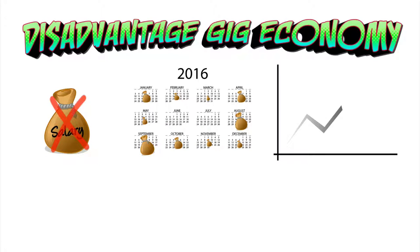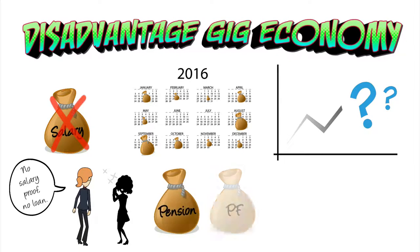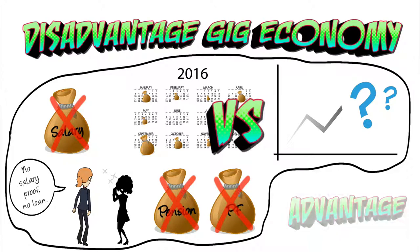Income volatility also means that you may find making future plans difficult. Organizations like a bank that require a salary proof to give you a loan may also create problems. And you are definitely not getting any pension or provident fund. This is the price you pay for the upsides of the gig economy.